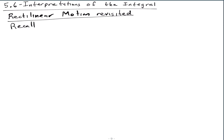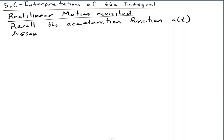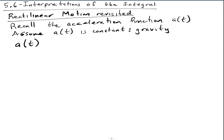So let's recall the acceleration function a of t. Let's assume specifically that a of t is constant. The important example here is — think of gravity. So you drop something or throw something in the air, and the acceleration is constant, whatever gravity is. So let's say a of t, if it's constant, we'll just call it g — g for gravity.